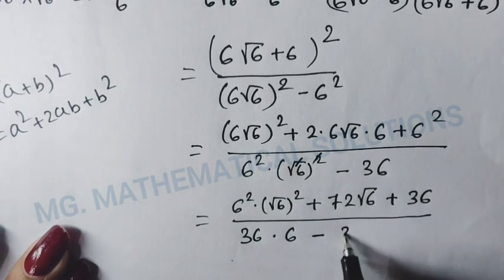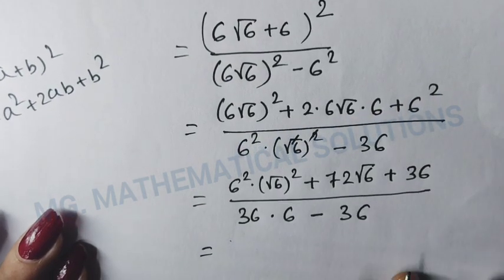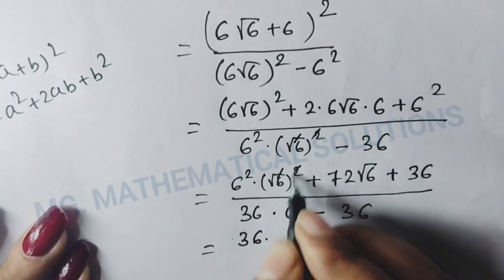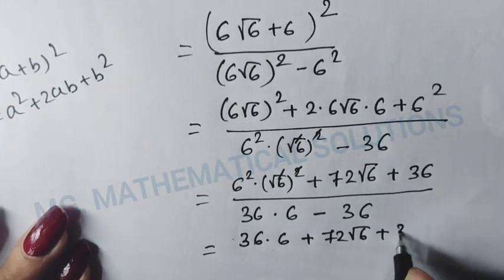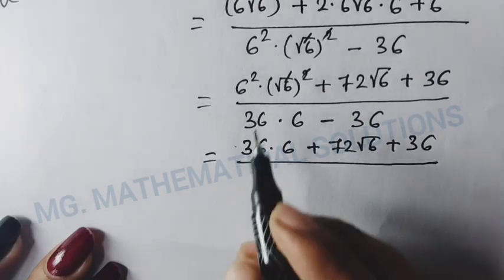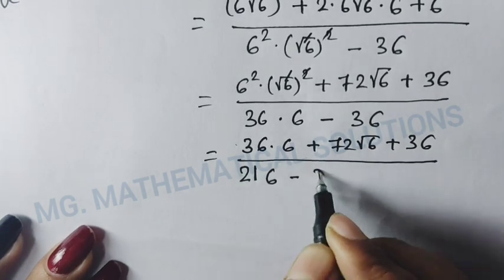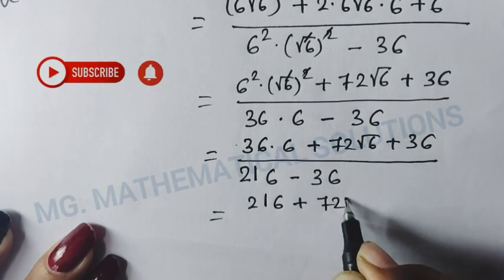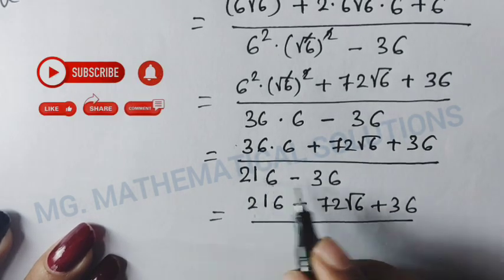This simplifies to (216 + 72√6 + 36) / (216 - 36), which equals (252 + 72√6) / 180.